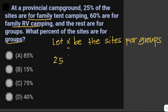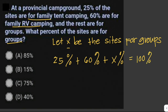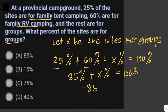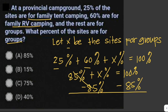So let's solve for X: 25% plus 60% plus X% equals 100%. And 25 plus 60 is equal to 85, plus X% equals 100%. We subtract 85% from both sides. Therefore, the percentage of sites for groups is equal to 15%. The answer is letter B.